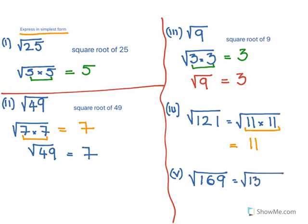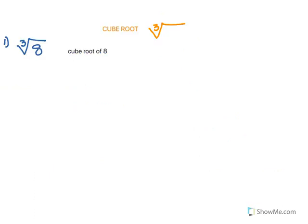Now square root of 169: 169 is 13 into 13, so that would be equal to 13. Therefore, square root of 169 equals 13.